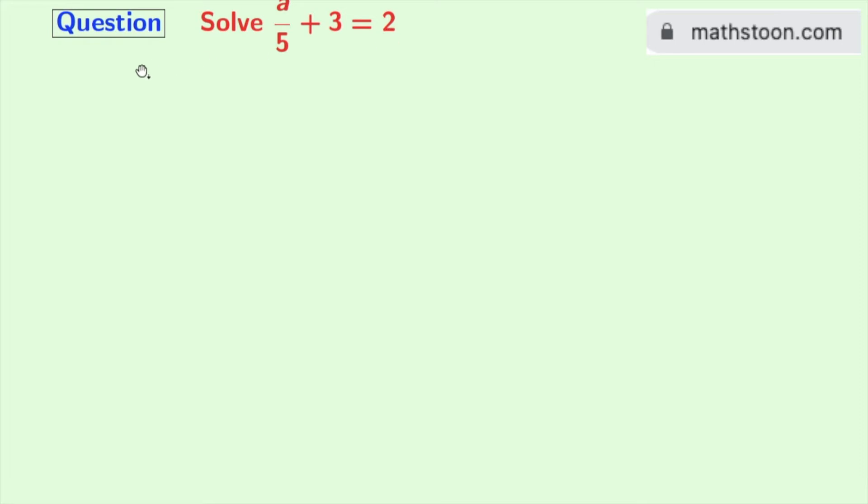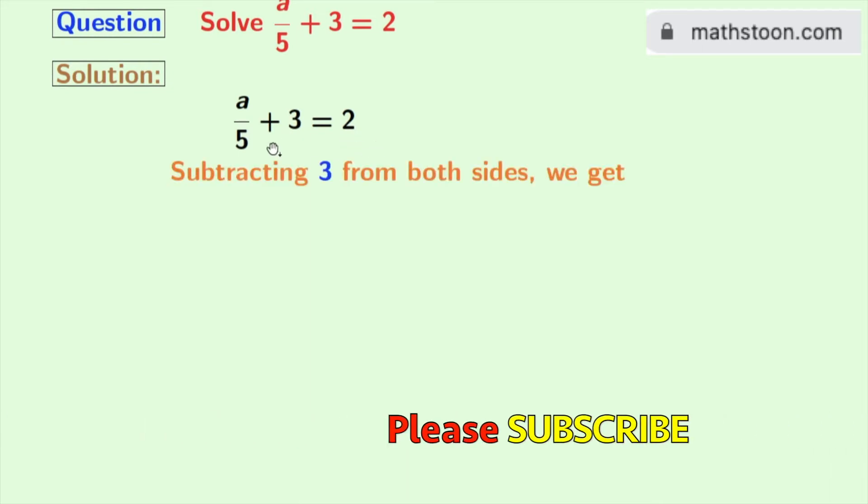So, let's start. This is our given equation. Now, we will subtract 3 from both sides. Doing so, we get a by 5 plus 3 minus 3 is equal to 2 minus 3.